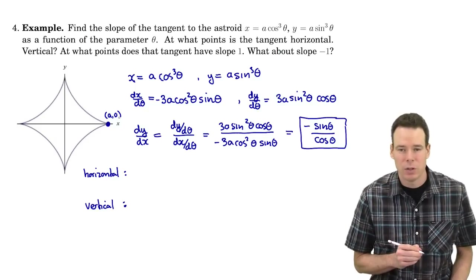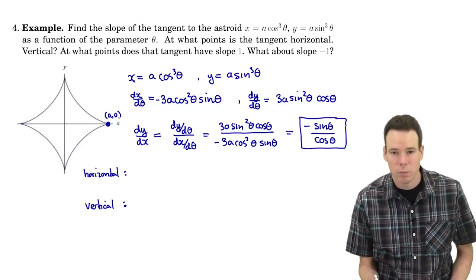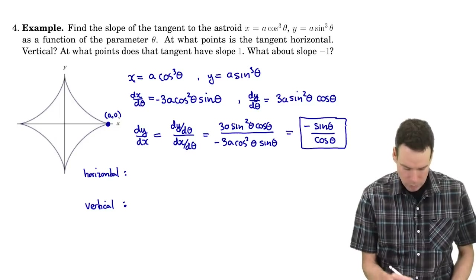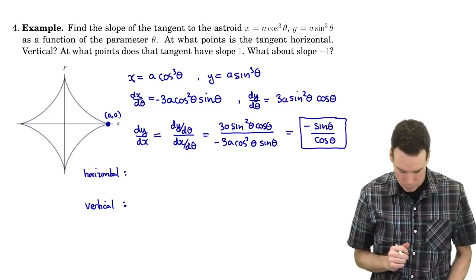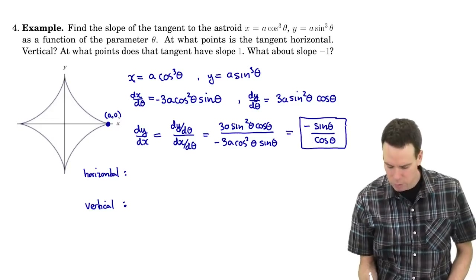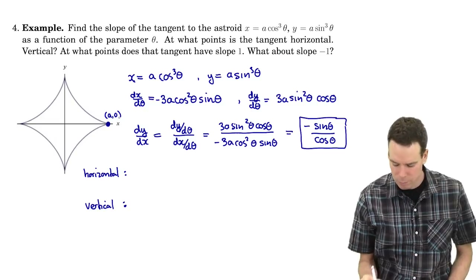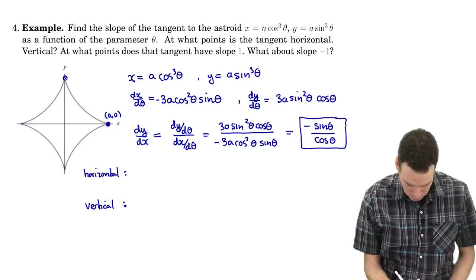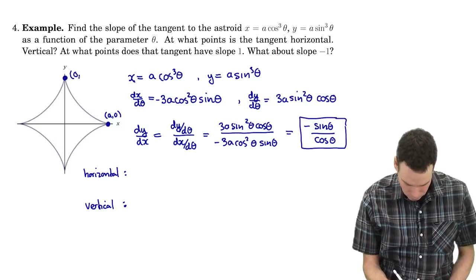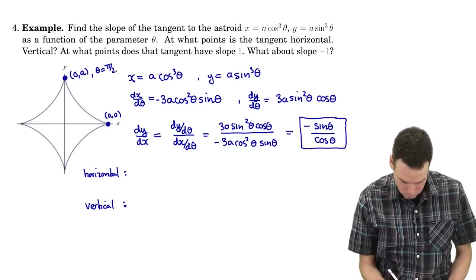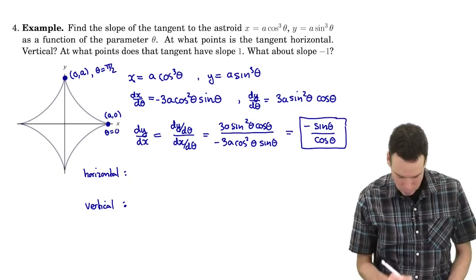When theta is π/2, cosine would be 0 so the x value is 0, and sine of π/2 is 1, so that corresponds to the point (0, a) up at the top. By similar reasoning, theta equals π corresponds to the point (−a, 0), and theta equals 3π/2 corresponds to x equals 0, y equals −a.